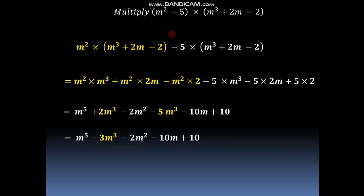So in this way we can find the product of any two polynomials — whether they are monomial, binomial or trinomial, or combinations like monomial and binomial, or binomial and trinomial.